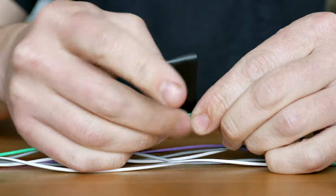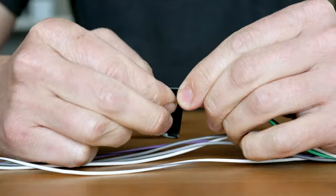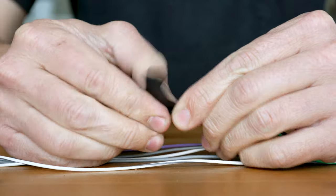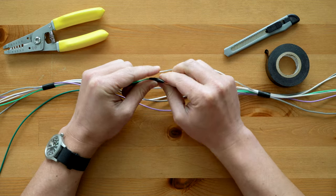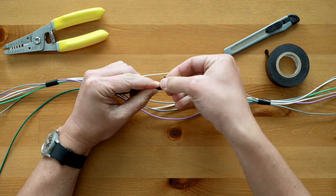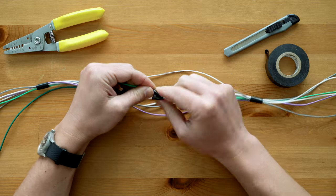We still prefer solder or posi-taps when available, but when you need to tap into a wire in your harness and you don't have any of those options available to you, this is a good way to make a secure mechanical connection.